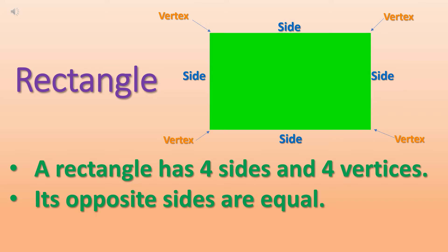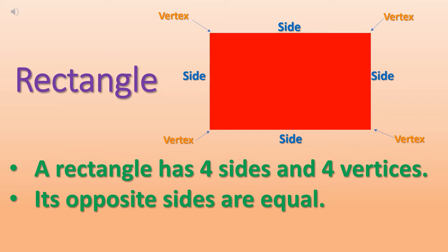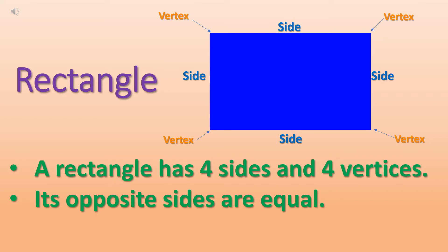So, rectangle has 4 sides and 4 vertices and its opposite sides are equal. Rectangles, opposite sides are always equal.